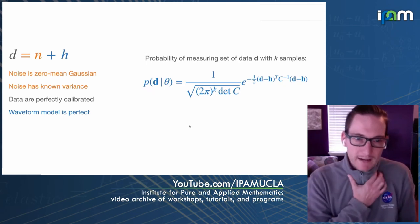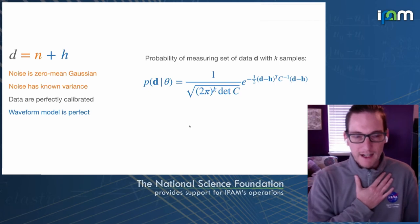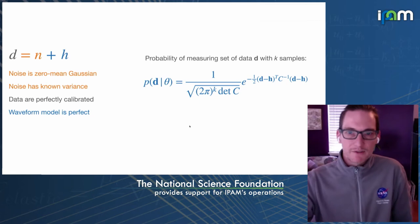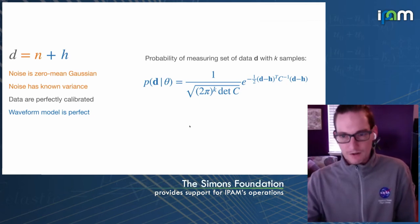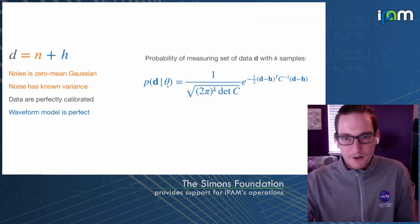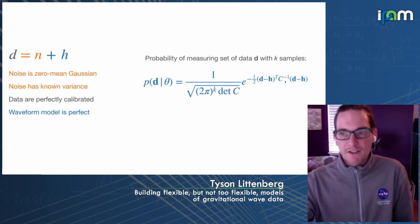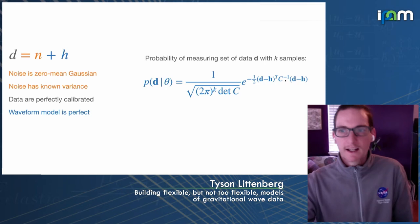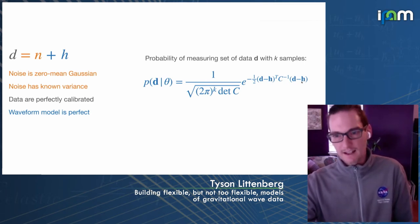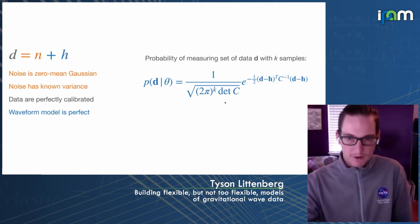Now we don't have just a single sample but an ensemble. If we have k samples of data, the probability of measuring all k is the joint probability of measuring the noise in each one. Now d is a vector, and instead of a single variance we get the noise correlation matrix: there's an implied sum over the vector of all data samples minus waveforms, the noise covariance matrix, and then that vector again.